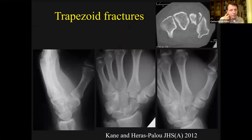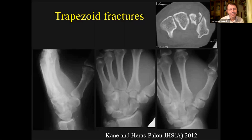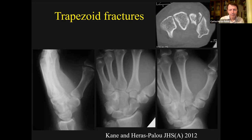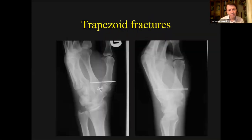This is a case of a fracture of the trapezoid, part of a first axial dislocation — a 19-year-old in a car traffic accident. Knucklecane and I published 11 cases of isolated trapezoid fractures from our unit in Derby, so if you look for them, you will find them. If they are displaced, they need treatment — this one was internally fixed and the metacarpal was also stabilized, with a good outcome.